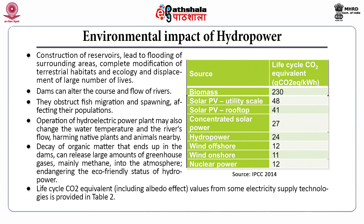Life-cycle carbon dioxide equivalent values from some electricity supply technologies are provided in this table. The life-cycle carbon dioxide equivalent from hydropower is 24, while from biomass it is 230 grams of CO2 equivalent per kilowatt hour of electricity production. Nuclear has less emission at 12 grams CO2 equivalent per kilowatt hour. Nuclear, wind, hydropower and solar all have less carbon dioxide emission per kilowatt hour compared to biomass.